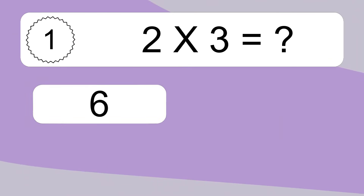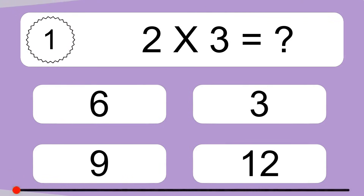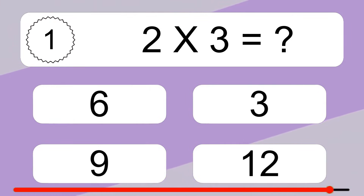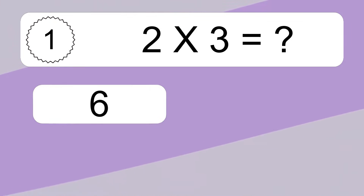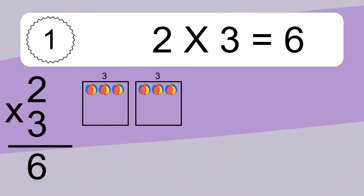2 times 3 equals what? 2 times 3 equals 6.